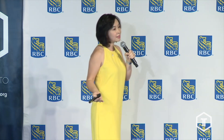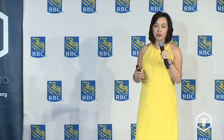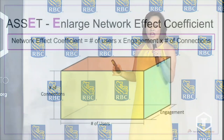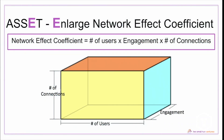Now that you have the supply side and demand side going, you need to move on to the letter E — and that's enlarging your network effect coefficient. I define network effect coefficient as the product of the number of users, the frequency of engagement, and the number of connections they can have on your network. Basically you're looking at the volume of a cube: number of users as the length, frequency of engagement as the width, and number of connections as the height. The bigger the cube, the stronger your network effect.